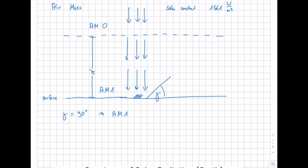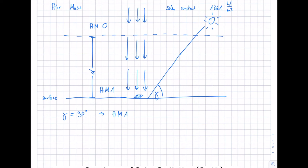Air mass one only occurs close to the equator. In central Europe, like Berlin, the sun's elevation angle varies. In summer at noon on the 21st of June, the highest elevation angle gamma is 60.8 degrees. In this case the radiation path through the atmosphere is longer than for a perpendicular position, giving an air mass of 1.14 to 1.15.